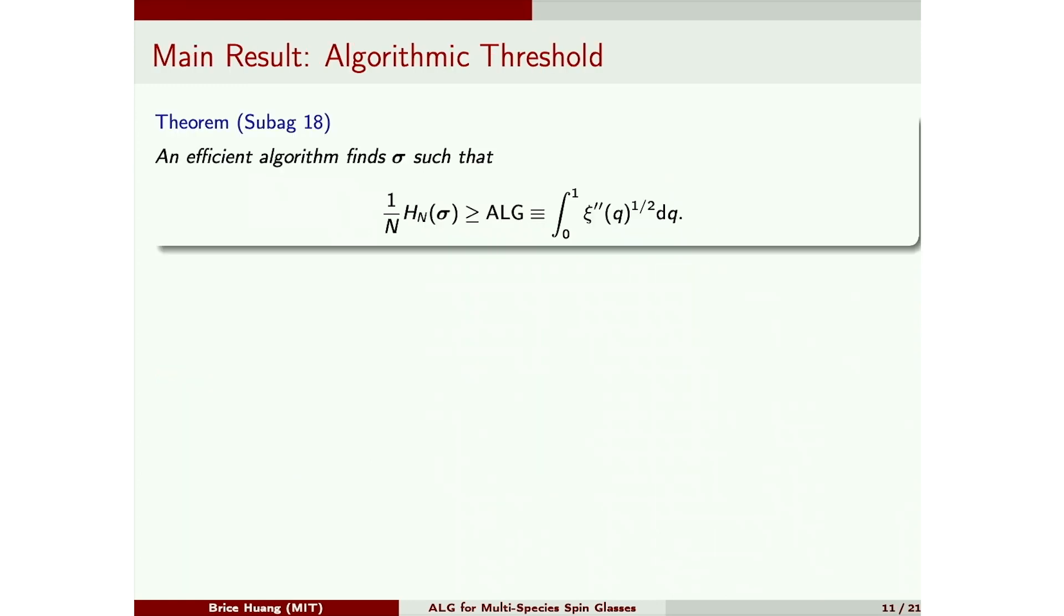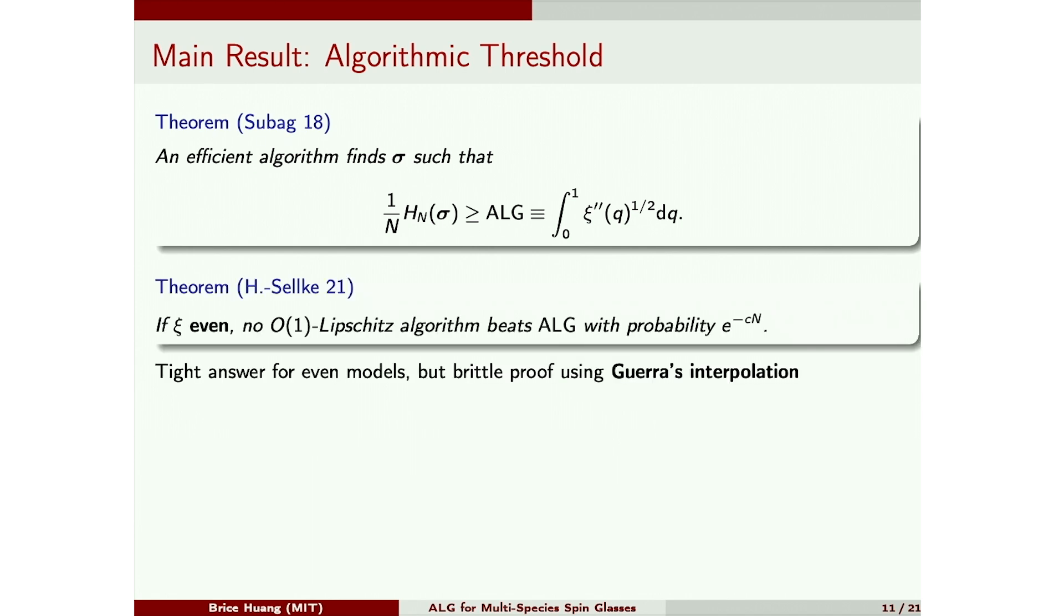So we can now state the main result. So the best algorithm we know for this problem is due to Subag, and it finds points with this value shown here. So remember, psi here is the mixture function. Two years ago, we showed that if the model is even, so if there's no odd degree interactions, then Lipschitz's algorithms cannot surpass this alg. And this gets the right answer for even models, but the proof is somewhat brittle. So the proof, the way we show that this forbidden structure doesn't occur, is using a tool called Guerra's interpolation. And this tool relies on convexity properties of the problem in a very crucial way. So when these properties don't hold, the entire proof goes out the window.